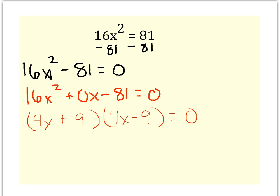Now if this was simply a factor problem, we'd be done, but it's not. It's a solve by factoring. We've got the equal 0, so we have to take both of our terms and set them equal to 0. So I have 4x plus 9 equals 0, and 4x minus 9 equals 0.